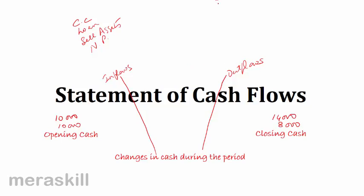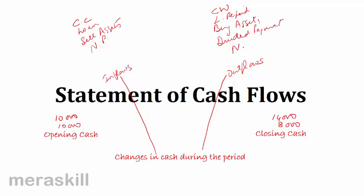What would be your outflows of cash? Capital withdrawn, loan repaid, you buy assets instead of selling, you pay dividend — so cash goes off — and you make a net loss. These are the reasons for outflows, and the previous ones are for inflows.